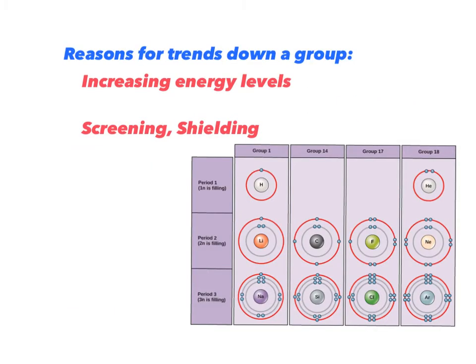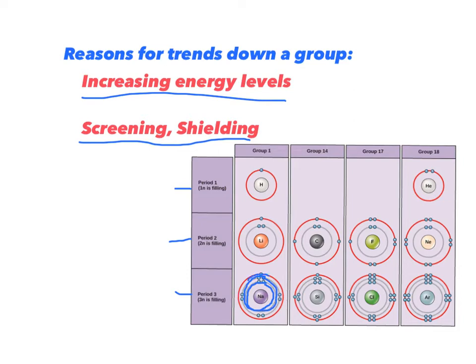The reasons as you go down a group are increasing energy levels and screening, or shielding, which mean the same thing. Increasing energy levels means you're adding more energy levels. Looking at Period 1, Period 2, Period 3, you can see there are more energy levels for electrons in Period 3 — an extra energy level — which gets those electrons further out from the nucleus. Also, the positive charge in the nucleus is getting screened by the inner electrons, so it doesn't have as great a pull on the outer electrons. That's what screening, also called shielding, is.